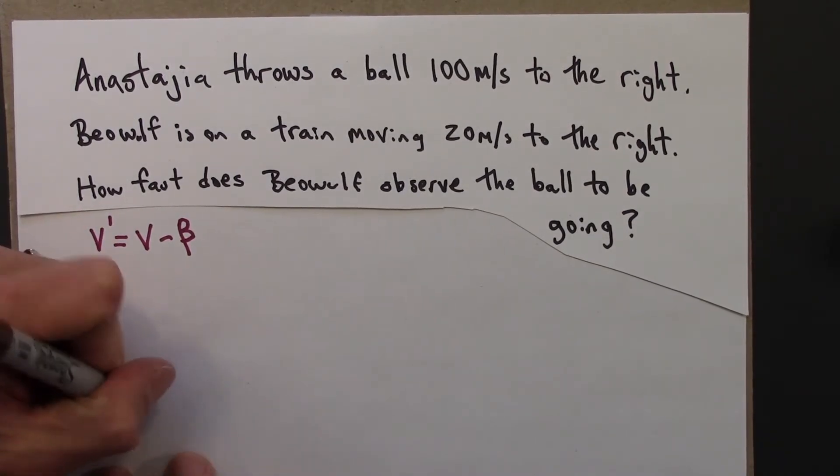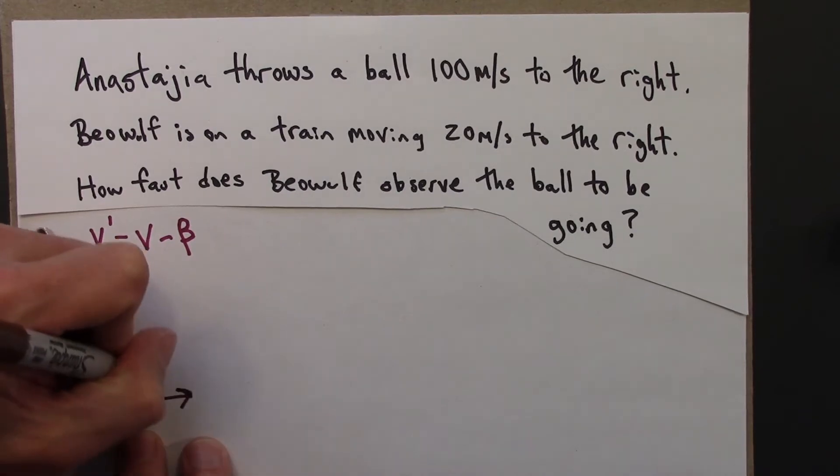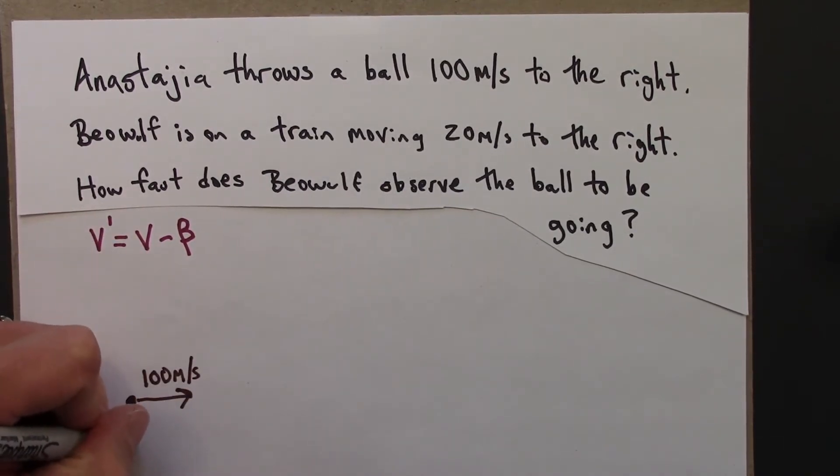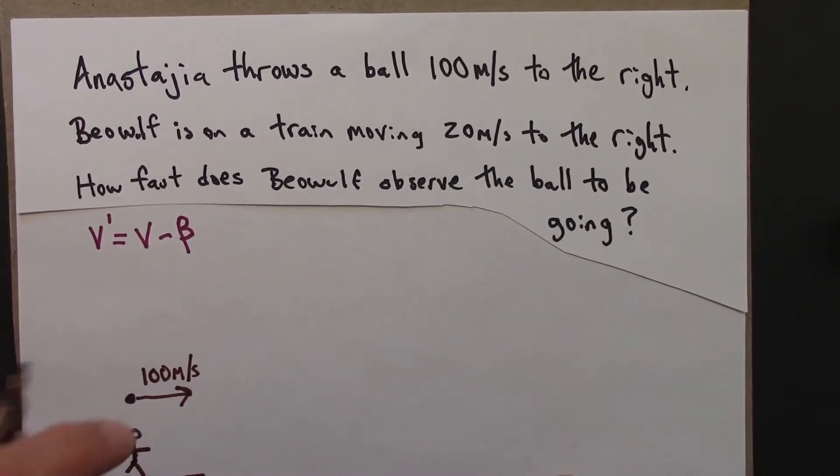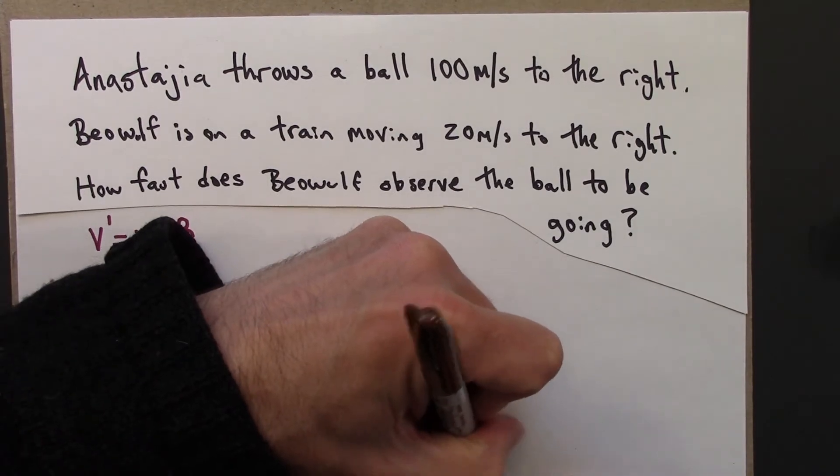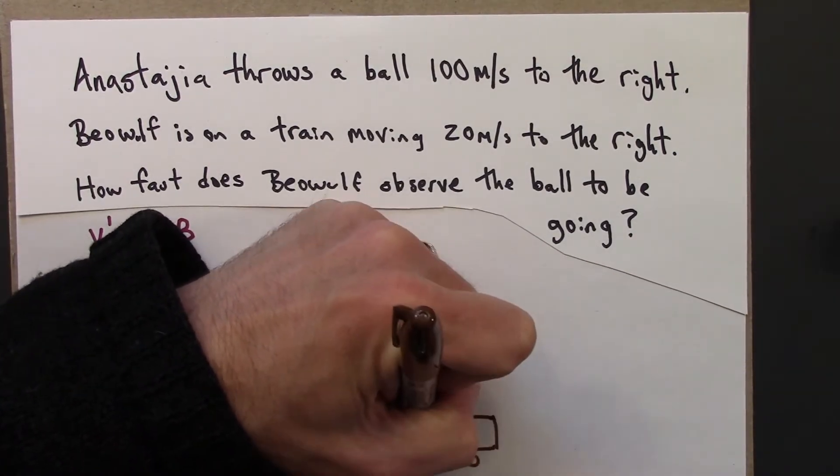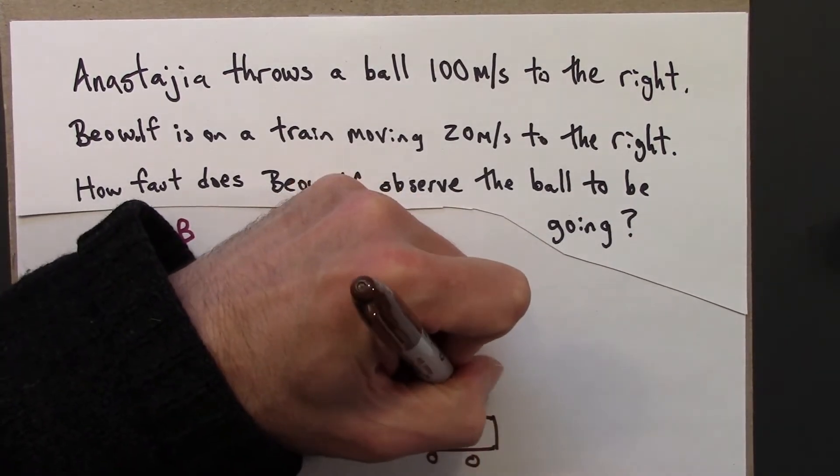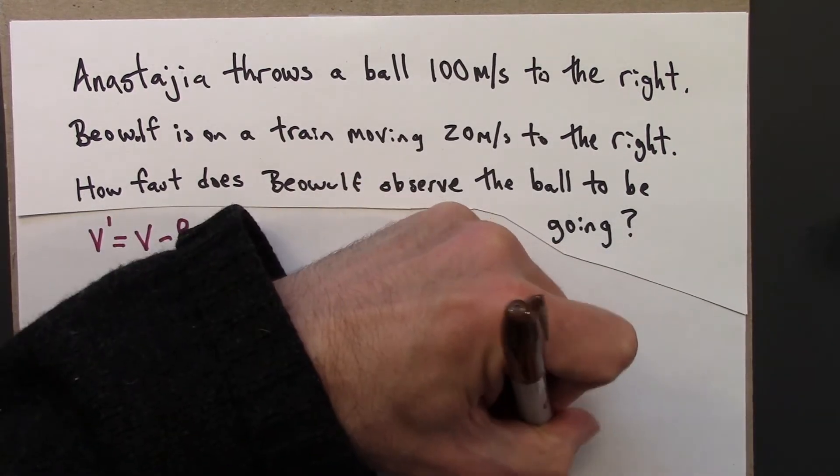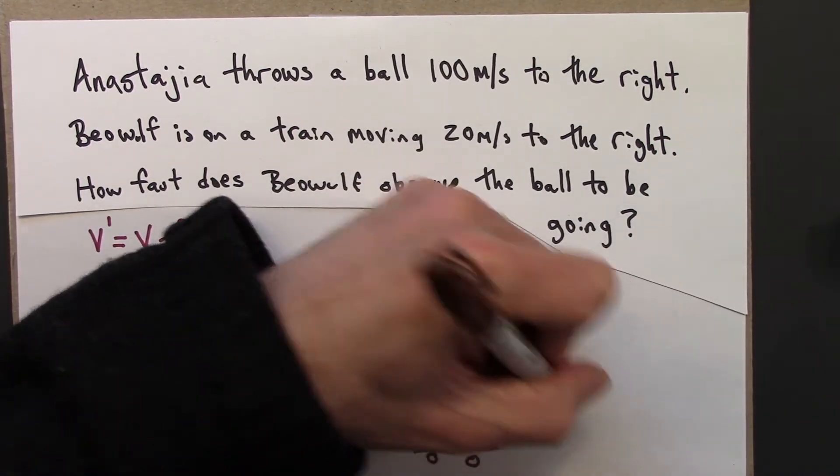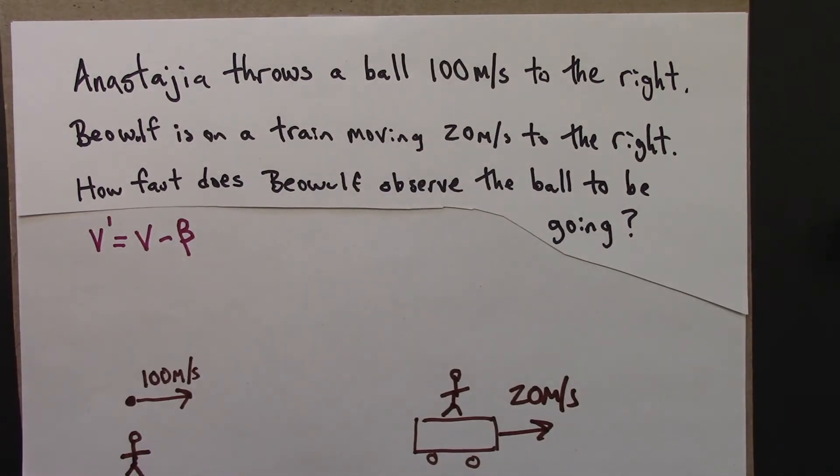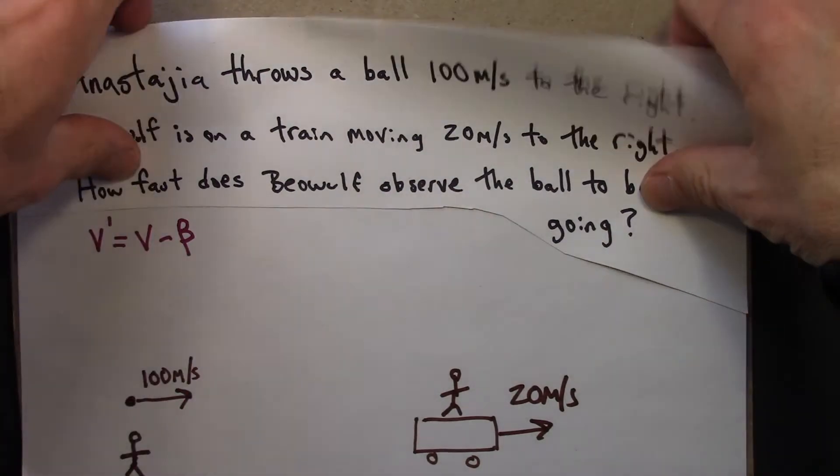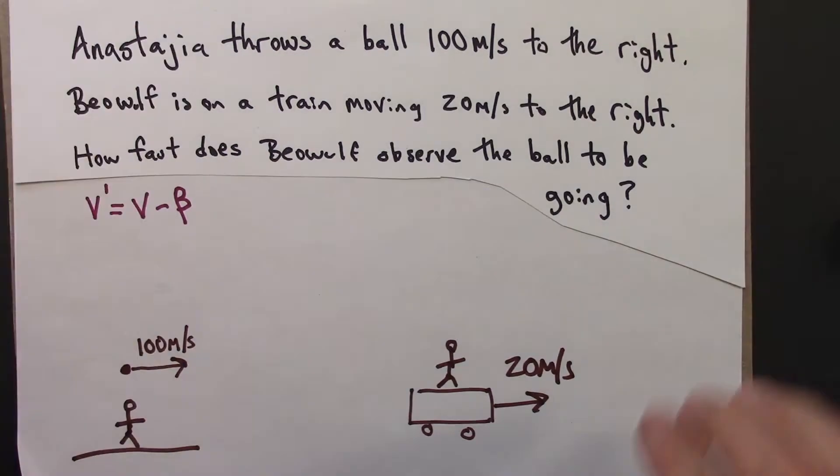Alright, so the ball is going at 100 meters per second as measured by Anastasia on the ground. And then we've got Beowulf on a train moving at 20 meters per second. Let me move that up a little bit.